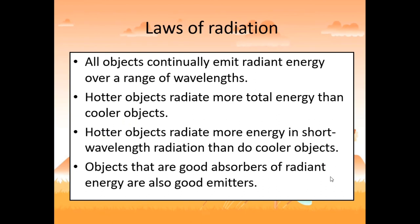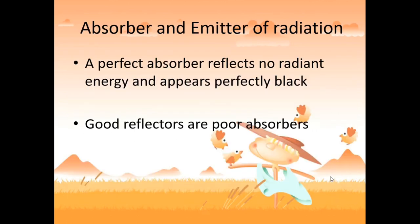There are several laws of radiation. First, all objects continually emit radiant energy over a range of wavelengths — both the sun and earth emit radiation, but at different wavelengths. Second, hotter objects emit more total energy than cooler objects. Third, hotter objects emit more energy at shorter wavelengths than cooler objects. Fourth, objects that are good absorbers of radiant energy are also good emitters. Fifth, a perfect absorber reflects no radiant energy and appears perfectly black. Good reflectors are also poor absorbers of radiant energy.